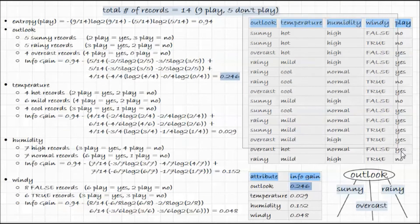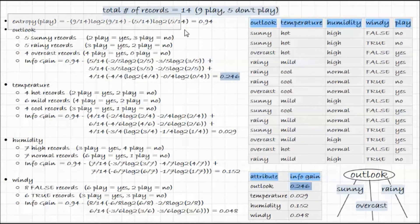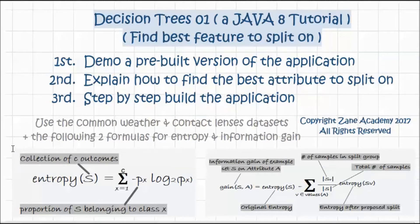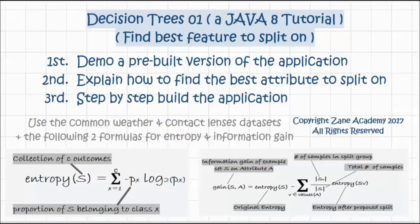We have 14 records, of which nine have 'play = yes' and five have 'play = no'. We calculate the entropy of the dataset as: minus (9/14) × log₂(9/14) minus (5/14) × log₂(5/14), which gives us this number. The entropy formula describes information gain by measuring the impurity of an arbitrary collection of examples. We obtain an entropy of zero if all examples have the same class attribute value.